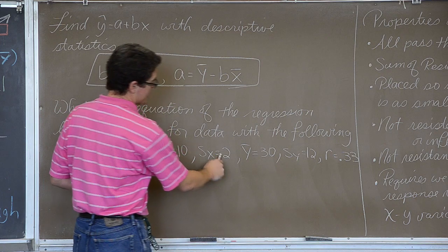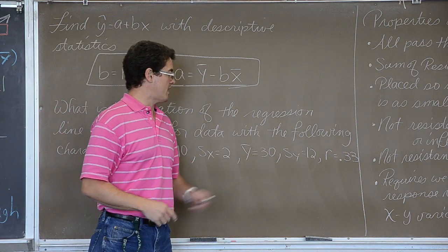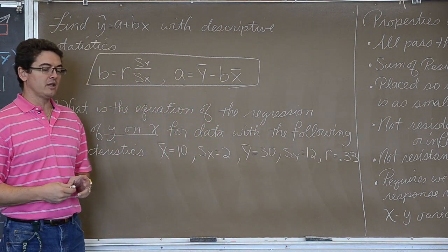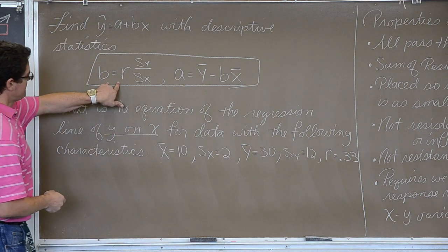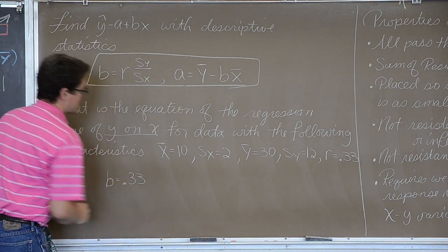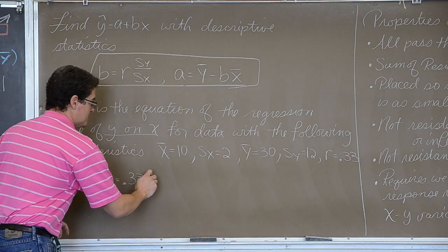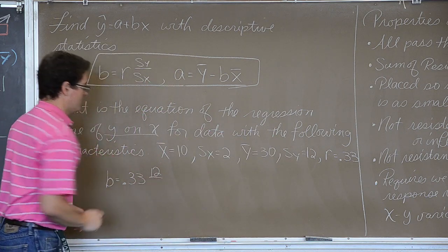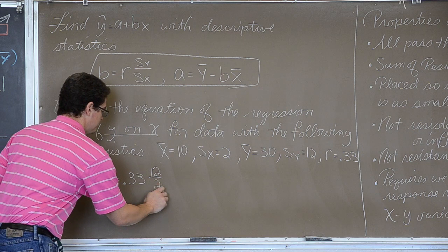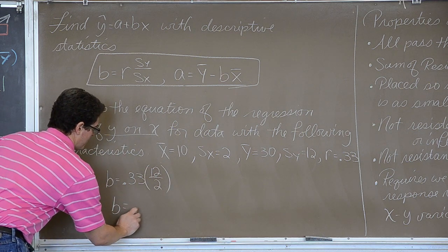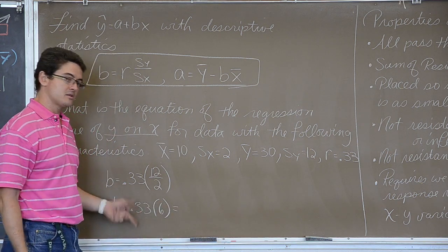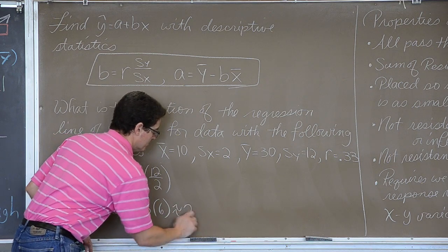The mean of x is 10, the standard deviation of your x values is 2, the mean of y is 30, and the standard deviation of y is 12, and the correlation coefficient is 0.33. So we have a fairly weak linear relationship. Well first we find out what the slope is. That is the correlation value, r, times the standard deviation of y, so you will have to read your problem and recognize what is going to be your x and y axis or your explanatory response variable. The standard deviation of x is 2, and that comes out to b is equal to 0.33 times 6, and 0.33 is a fraction, is like one-third, so 6 divided by 3 is about 2.